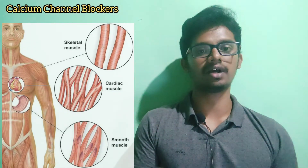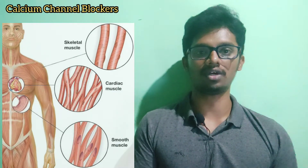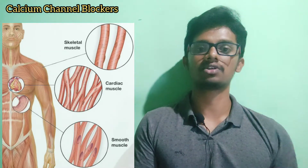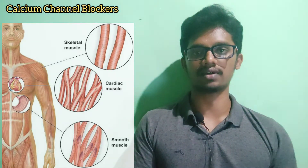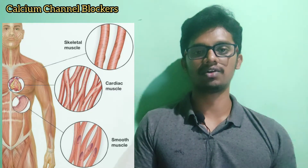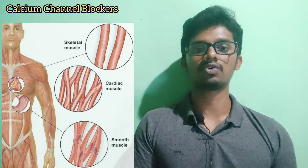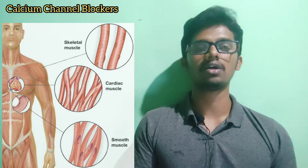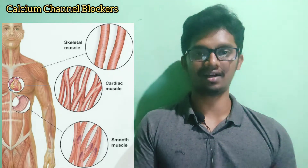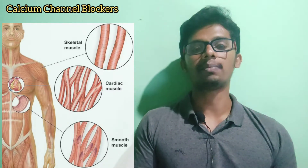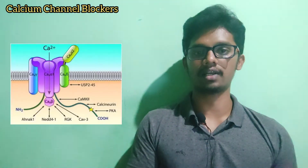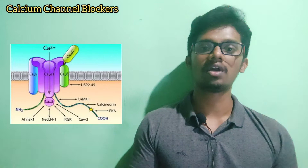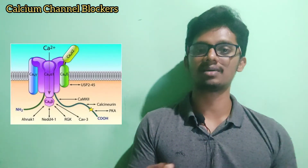Smooth muscles are relaxed and contracted — we all know that. The reason why is calcium. Calcium is the most important factor in muscle contraction. Calcium comes in and goes out of the cells through a channel, and that is called the calcium channel.